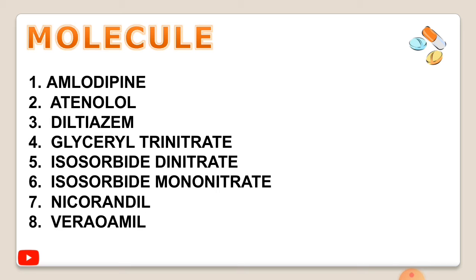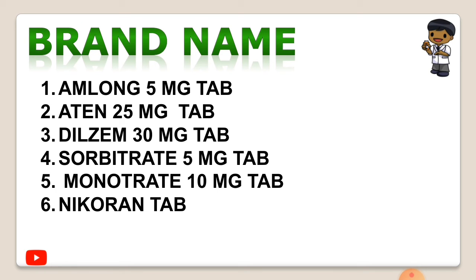In anti-anginal drugs, the molecules in the list include: glyceryl trinitrate, isosorbide dinitrate, isosorbide mononitrate, and nicorandil. Apologies for any spelling errors. These are the key molecules in anti-anginal drugs.